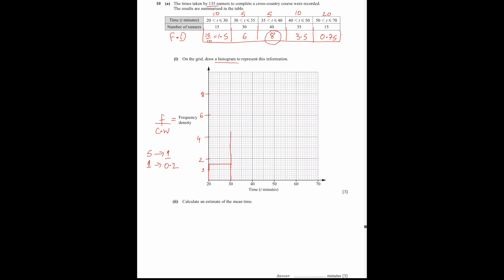After 30 to 35 frequency density is 6, which is pretty straight forward. 35 to 40 frequency density is 8. Then 40 to 50 frequency density is 3.5. And 50 to 70 is 0.75. We will put it a little higher, we will put it down to 0.8 but it should be on the top of 0.6. So this is our histogram to represent this information.